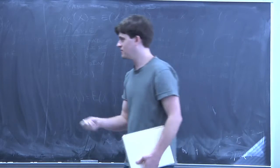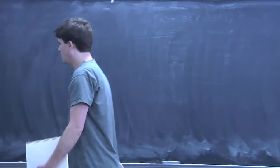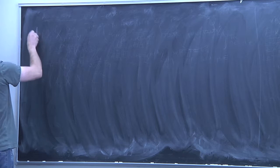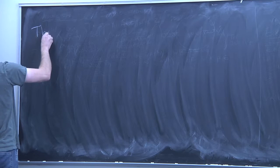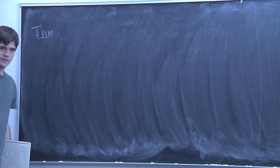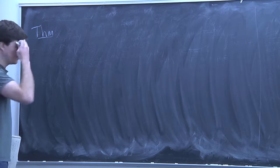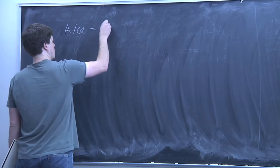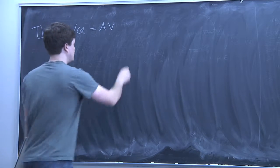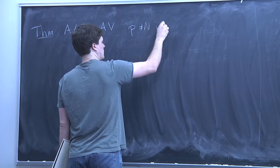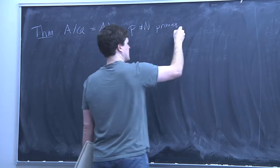The first milestone is we're going to prove what I call Theorem B in the first lecture — the following criteria to check if an abelian variety has rank zero. So here's the theorem. Suppose you have an abelian variety over Q, and two distinct prime numbers P and N, where N is odd.